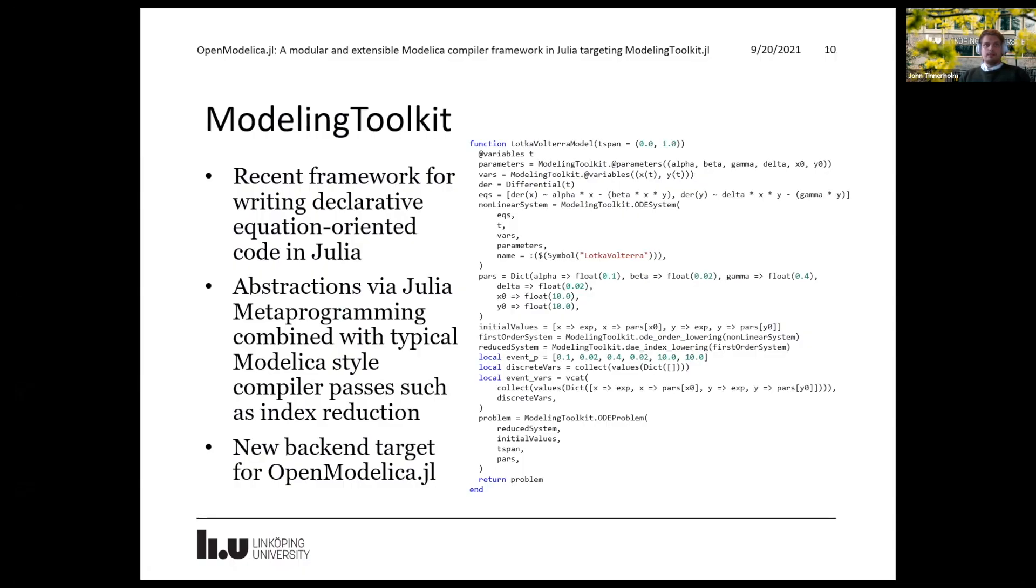So ModelingToolkit, as we've seen previously, it's a recent framework for writing declarative equation-oriented code in Julia. However, it's not just limited to classic declarative equations. You can also do parameter estimation and so on. And ModelingToolkit is implemented in Julia and several abstractions are provided via Julia metaprogramming.